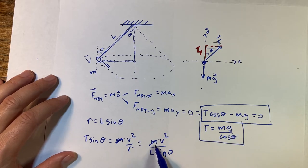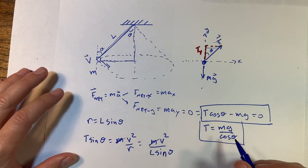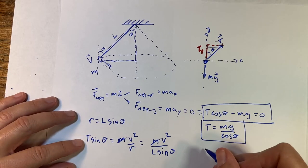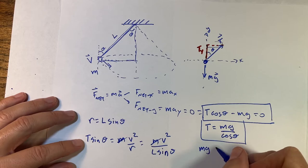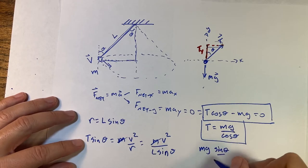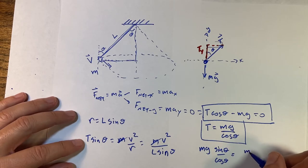Because this T, I can't stop right there. So let's put in this T over there because I don't really care about the tension. So now I get mg sine theta over cosine theta equals m v squared over L sine theta.